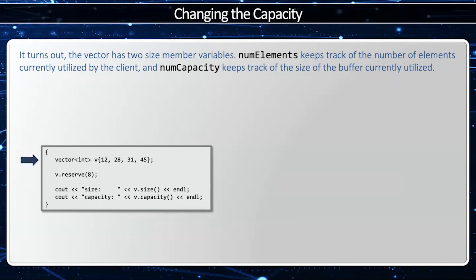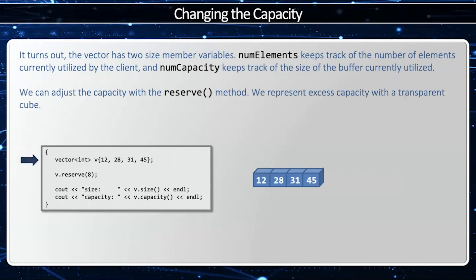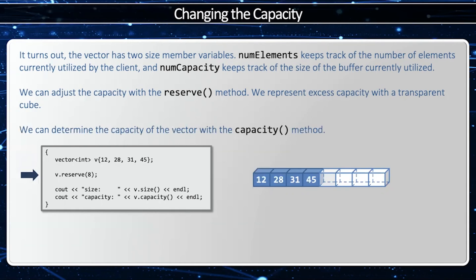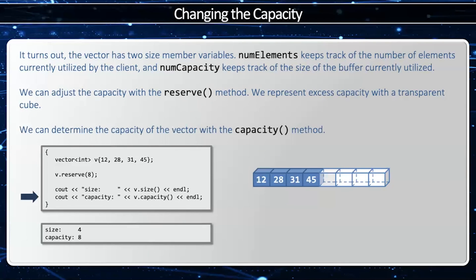So now I'm going to have a vector of integers initialized with an initializer list with four elements: 12, 28, 31, and 45. When I say reserve(8), I'm going to increase the capacity but not change the size. I represent an element that is not initialized with a transparent cube. Notice how the constructor was called only four times for 12, 28, 31, and 45, and the last four elements were never constructed — those slots are reserved in memory but not actually used. We can determine the capacity of the vector with the capacity method, so v.size() is 4 and v.capacity() is 8.